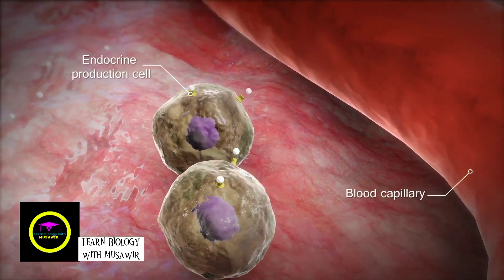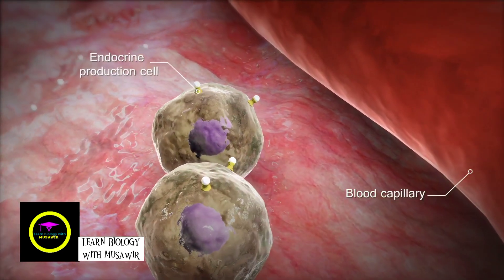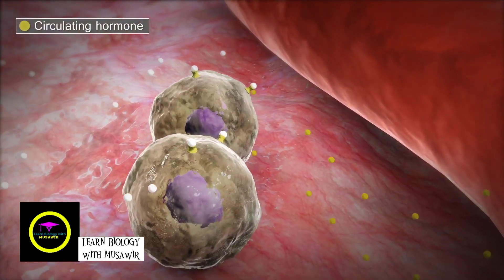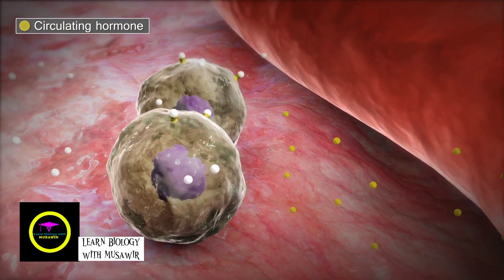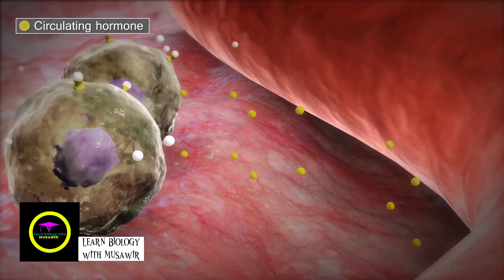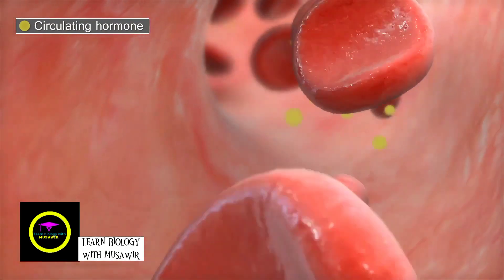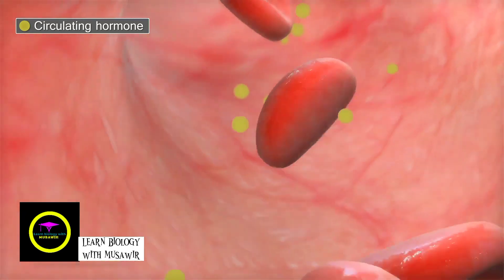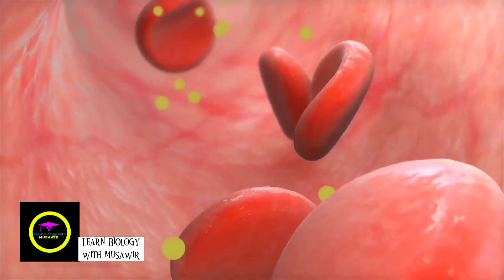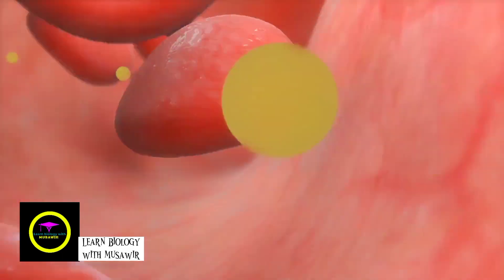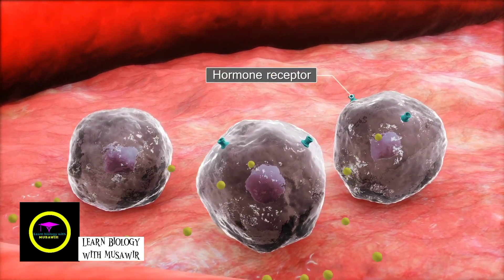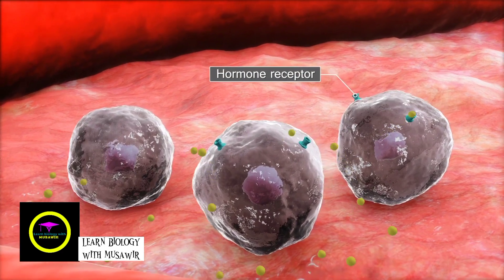Most endocrine hormones are circulating hormones. These chemical signals travel through the bloodstream, facilitating communication between a production cell and a target cell. They pass from the secretory cells that discharge them into interstitial fluid and then into the blood. Only target cells with the appropriate hormone receptor will respond to the hormone signal.